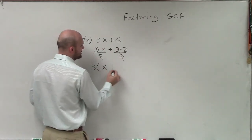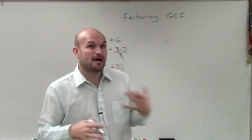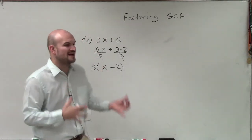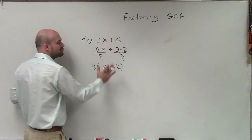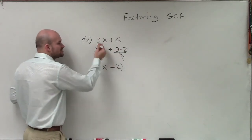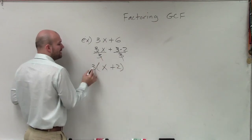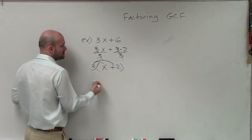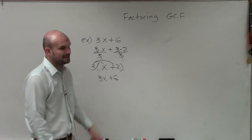And we can always check factoring out by the GCF by going back and applying our multiplication. Because remember, when we're factoring, what we're trying to do is we're trying to rewrite an expression as a product of two other expressions. So when I divide them out, I'm rewriting my divisor outside as the product. And again, to check my answer, I just need to go ahead and apply my multiplication. So therefore, I have 3x plus 6.